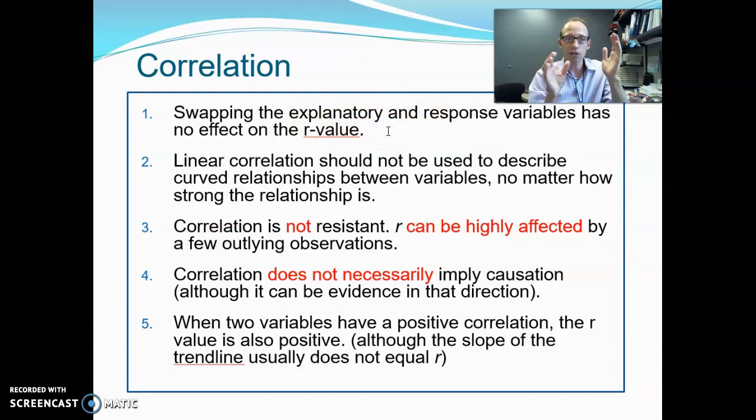Swapping the explanatory and response has no value, no effect on the R value. In other words, if we took extroverted, or loneliness on the bottom, extroverted on the side, and then we swapped them. So, lonely or extroverted was on the bottom, loneliness on the side, you're going to have exactly the same R value. The equation of your trend line, that line, that best fitting line, that regression line, that's going to be different. But the R value itself, the correlation coefficient, and then certainly the R squared, because R squared comes from the R value, those are going to be the same, whether you swap them or not.